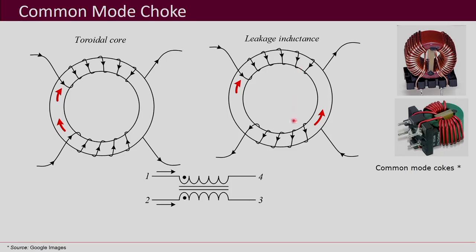Since any practical inductor will have some leakage, the differential mode currents will definitely be reduced by the leakage inductance, but will otherwise be unaffected by the main inductance of the common mode choke. Whereas for common mode currents, they are going to be attenuated or reduced significantly because of the common mode chokes. So these common mode chokes will be able to filter common mode currents, but they are almost invisible to the differential mode currents.